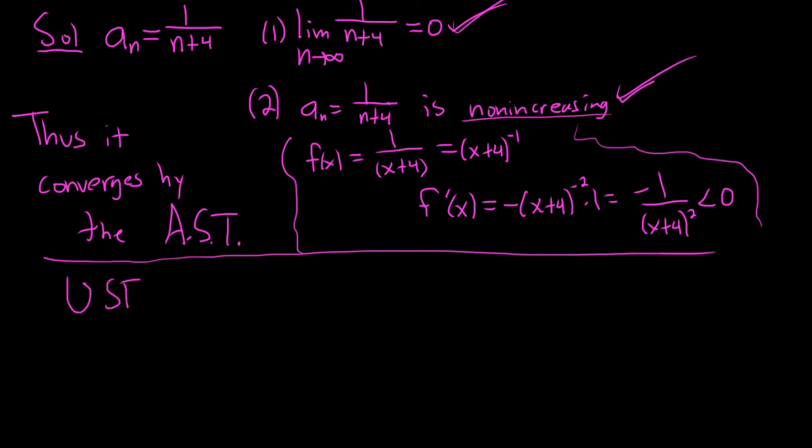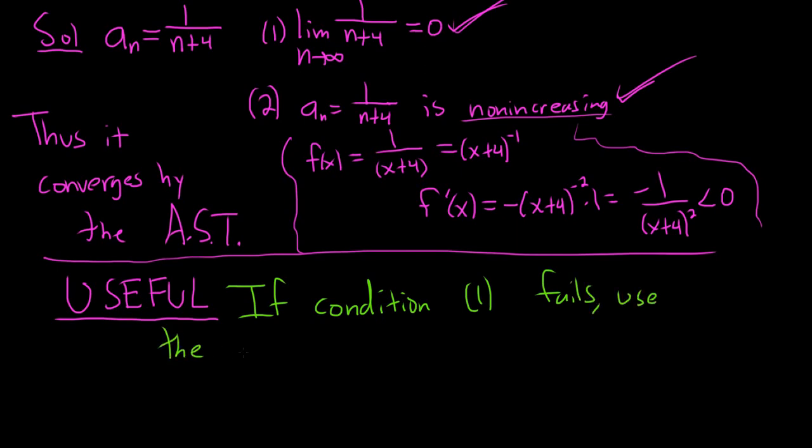Something that's really important that I should totally mention. So useful. This is really useful. If you're ever doing the alternating series test and your first condition fails, then you want to use the nth term test. If condition 1 fails, use the nth term test for divergence.